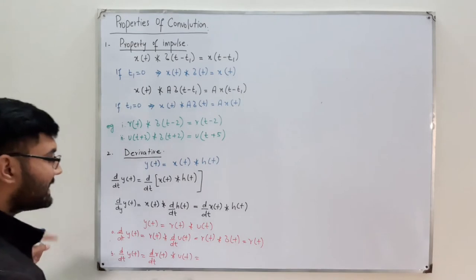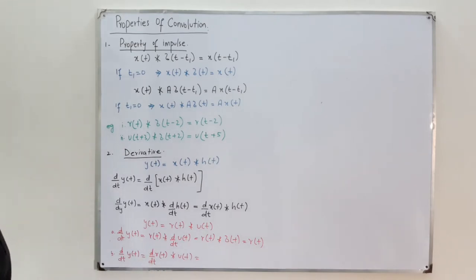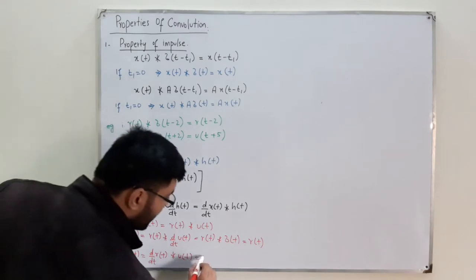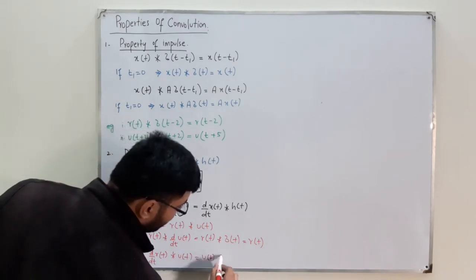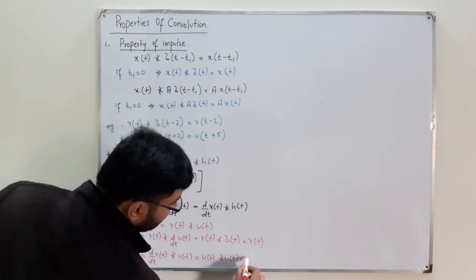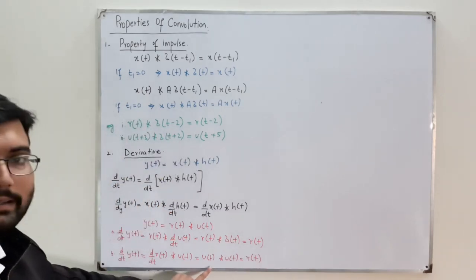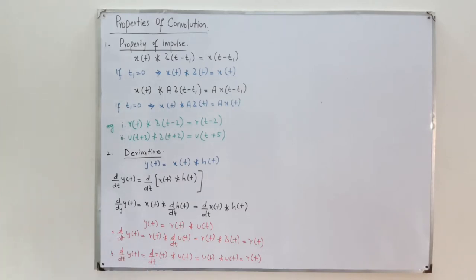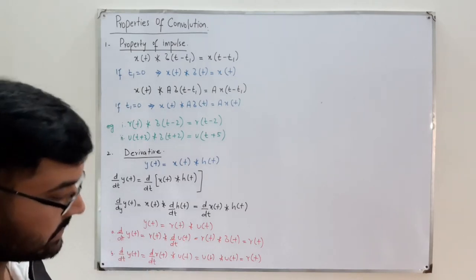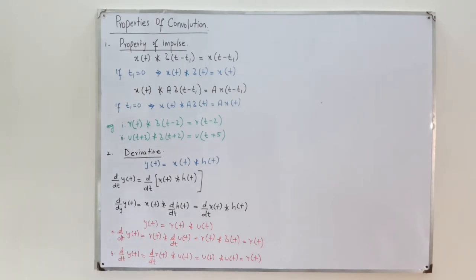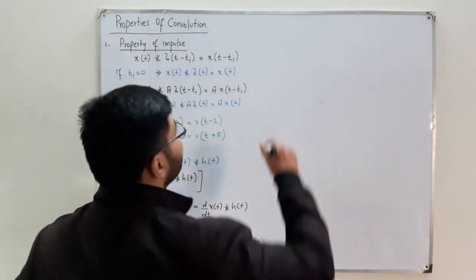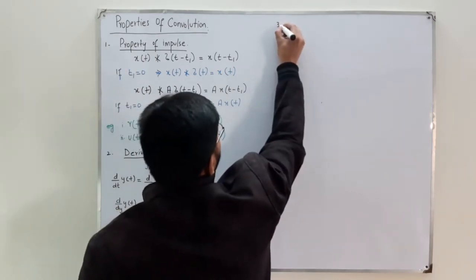For case B: we take the derivative of x(t) = r(t) and convolve it with h(t) = u(t). The derivative of r(t) is u(t), so we get u(t) convolved with u(t), which gives r(t). Both cases give the same result.